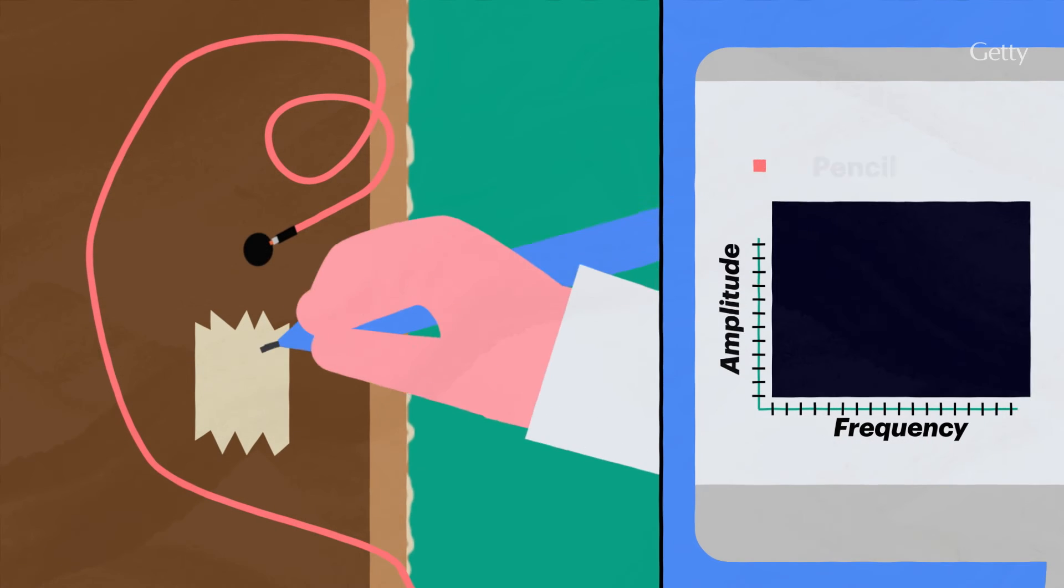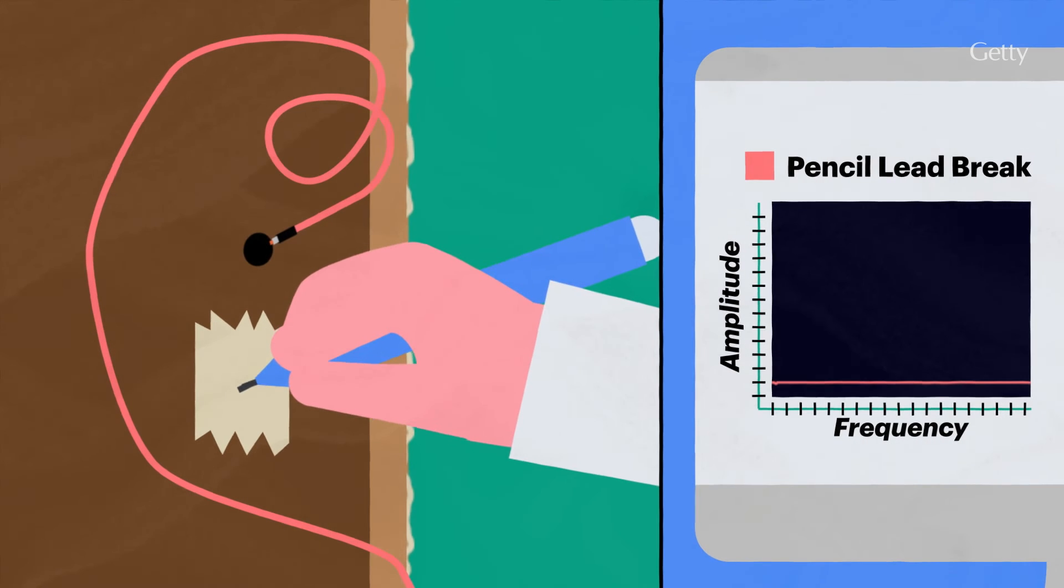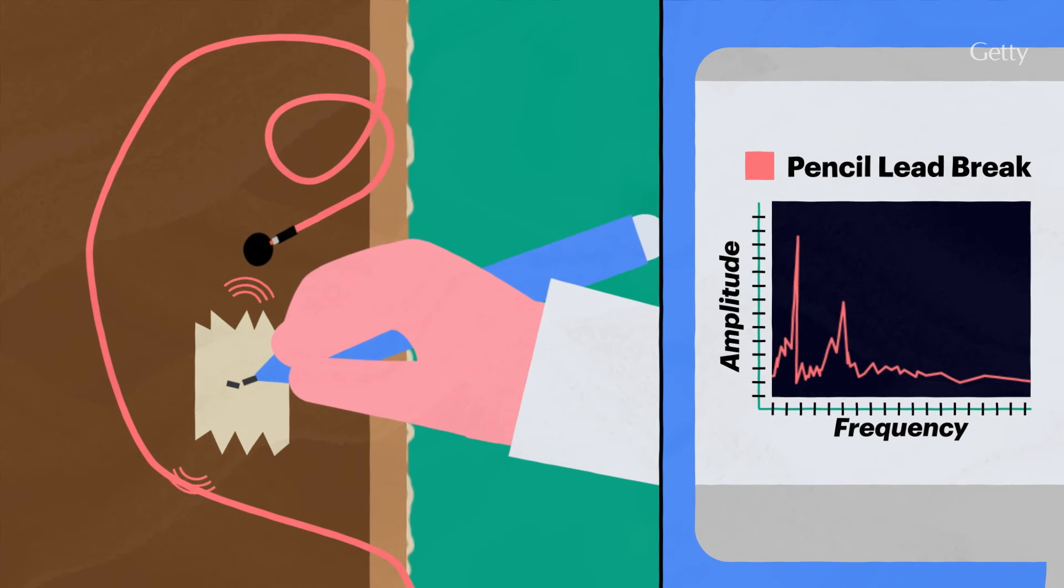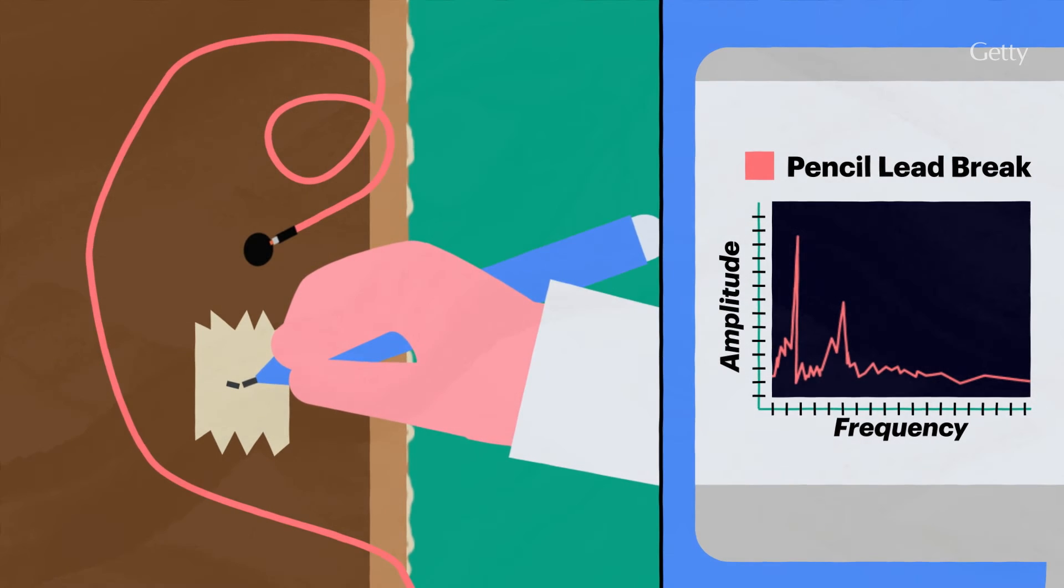Pencil lead break tests also help determine the characteristic signals associated with cracking. They're performed regularly to ensure the sensors are in contact with the object and working properly.